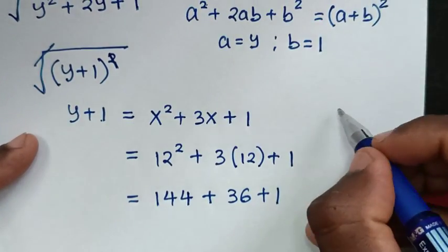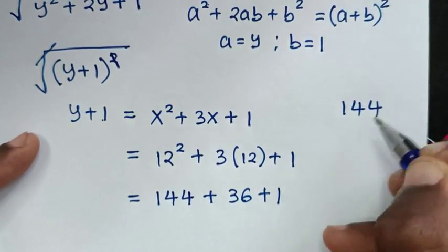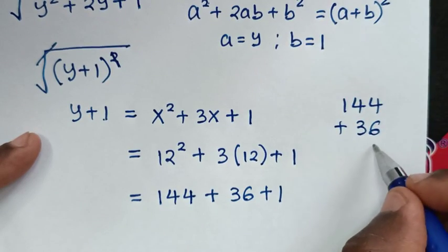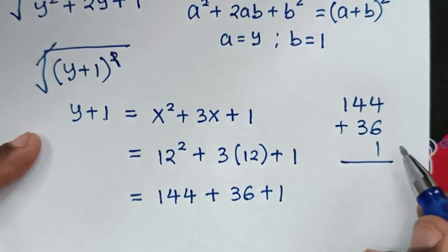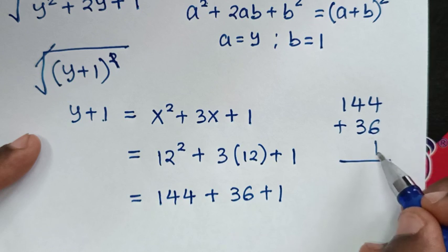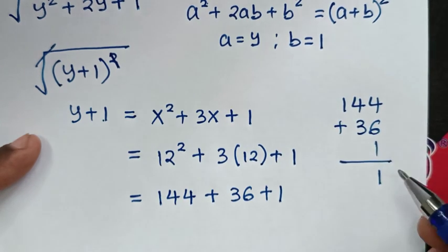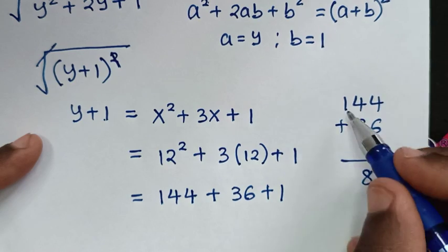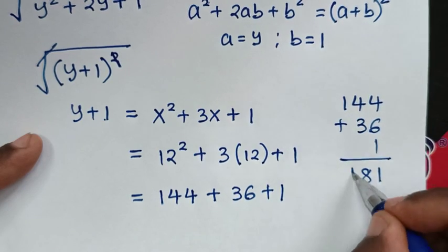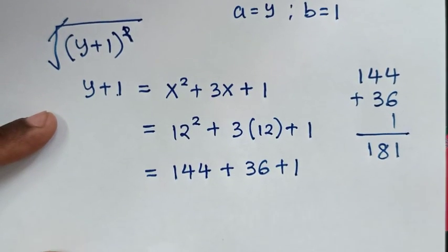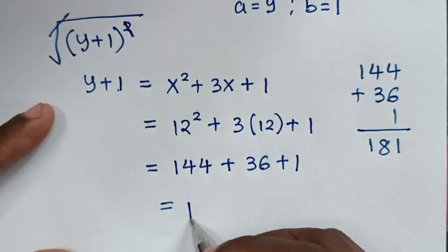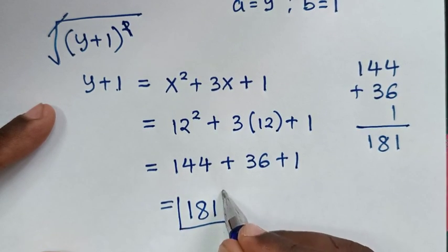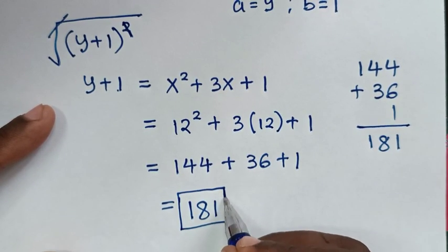So to find the sum: 144 plus 36 plus 1. That gives us 181. So 181 is the value of this problem.